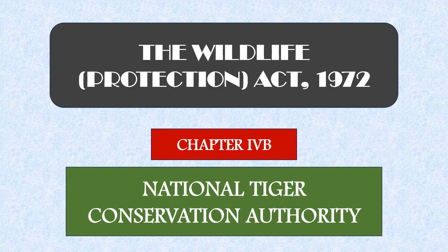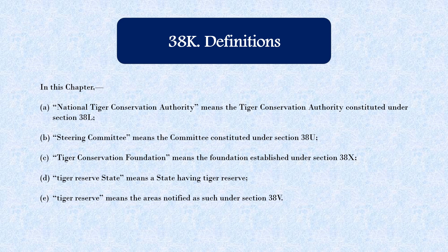We are continuing the Wildlife Protection Act 1972, and today we are going to study about a new Chapter 4P, which consists of the National Tiger Conservation Authority. We will look at what the requirement of the National Tiger Conservation Authority is and the definitions of some terms often used in this chapter.